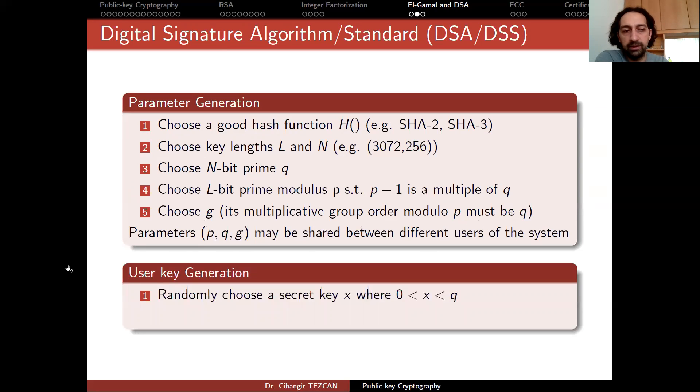Now you need to generate your keys. How you do is as follows: randomly choose a secret key X and calculate the public key Y that equals to G to the power X modulo P. As you can see at this point, what you're simply doing is the El-Gamal key generation.